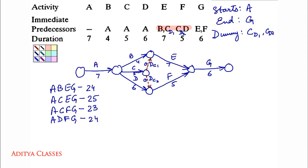Now, which one is the critical path? This is the critical one: A, C, E, G with duration 25. We need to represent it by double lines. If you wish, you can also make the dummy double-dashed.